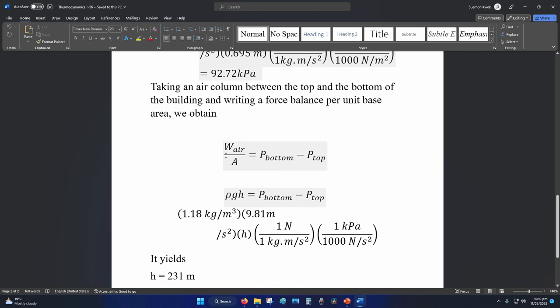We convert this weight over area to rho GH because we're trying to find the height of the building. So we know the density of mercury. We know gravity.